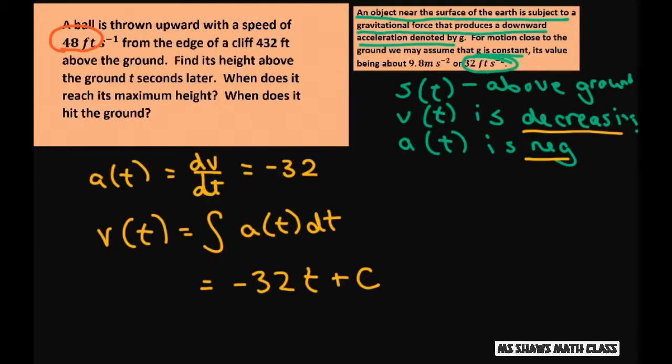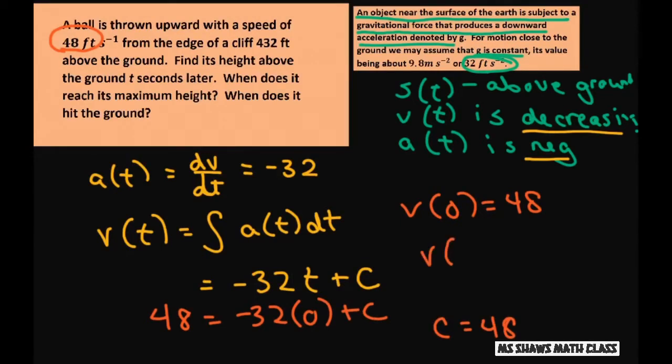This gives us 48 equals, so we have v(0) equals 48. So we get negative 32 times 0 plus c. So c equals 48. So our final equation here is v(t) equals negative 32t plus 48.